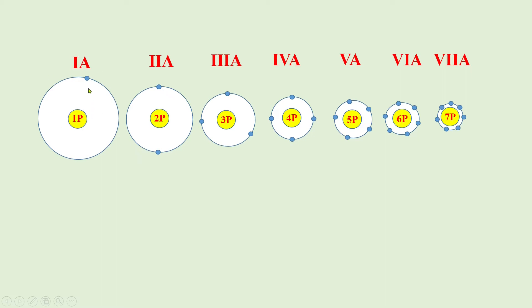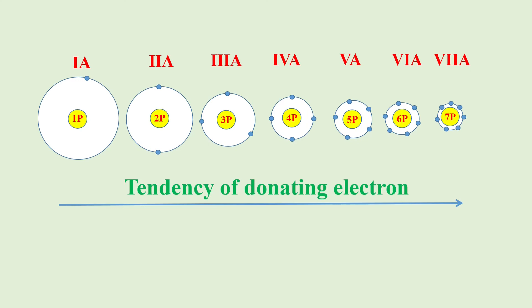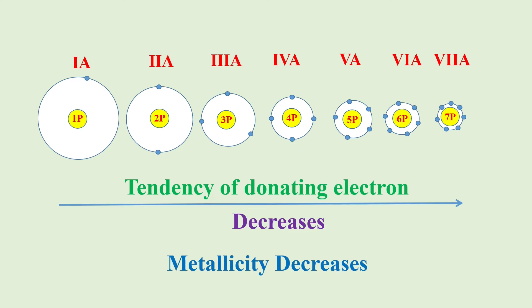In case of group 1a, the tendency of donating that one electron will be more, because the distance between proton and electron is greater and attraction is weaker. But in case of group 2a, 2 electrons are a little nearer, so the tendency of donating electrons becomes a little less than 1a. In 7a, elements do not donate electrons but react by gaining electrons because the attraction between proton and electron is very strong — the proton can even attract the electron of another atom. So as we go from left to right in any period, the tendency of donating electrons goes on decreasing, and metallicity goes on decreasing.